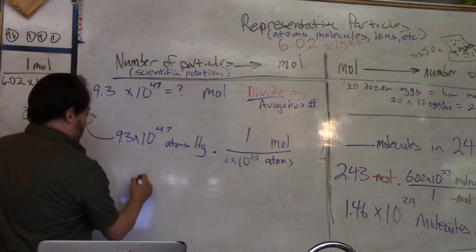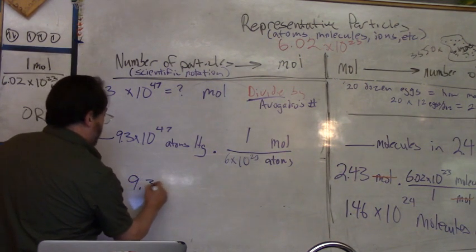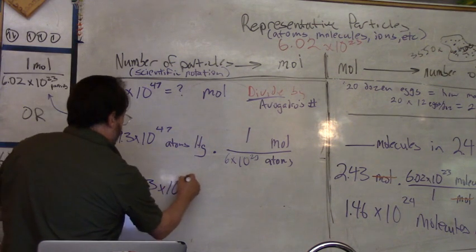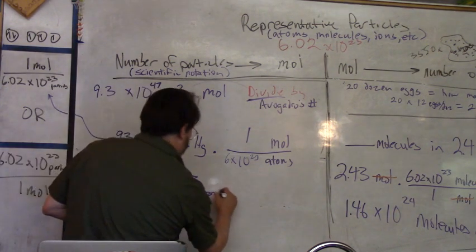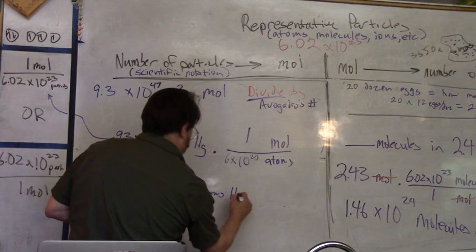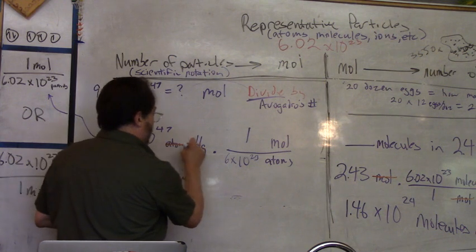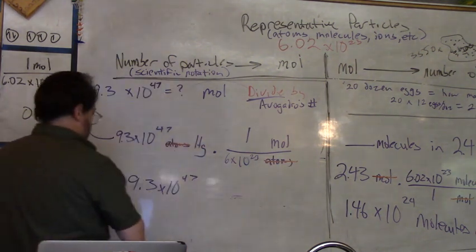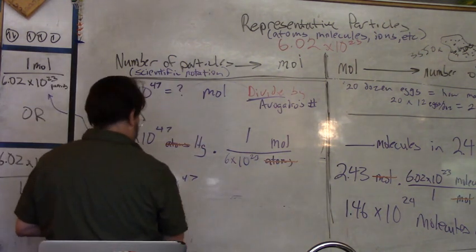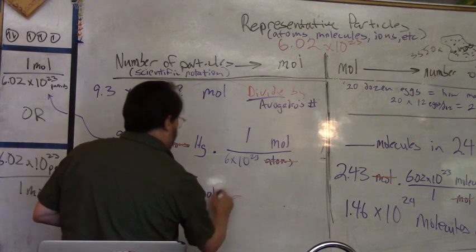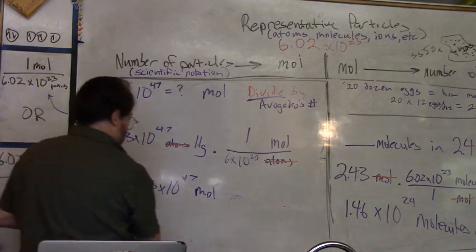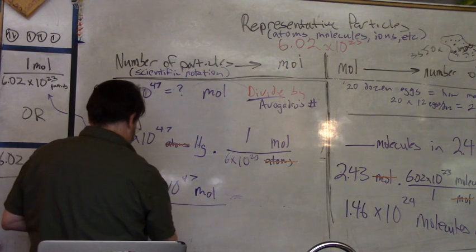Anyway, you end up with a fraction of 9.3 times 10 to the 47th atoms mercury - actually atoms is cancelled out. Let's do that before we read this out. Atoms... atoms. And 9.3 times 10 to the 47th moles, because that's what's left, divided by Avogadro's number.